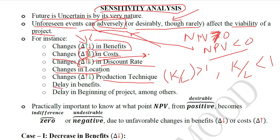Then we have delay in benefits. If the benefits get delayed, the NPV will definitely decline, and that is also a kind of possibility that can affect the estimated outcome of the project. Delay in the beginning of the project will also delay the costs as well as the benefits, and can affect the NPV of the project. Because if the project is not completed or started within time, its demand and usefulness might evaporate.